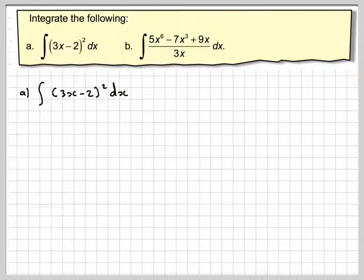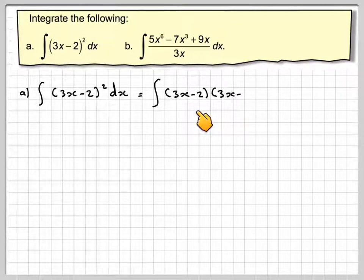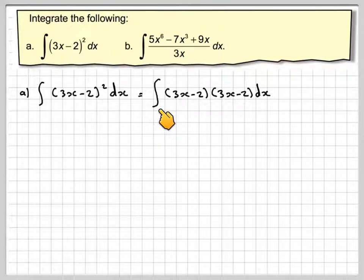So writing the first one out, (3x - 2)² means you do (3x - 2)(3x - 2). Notice I've not removed the integral sign because I haven't actually performed the process of integration.